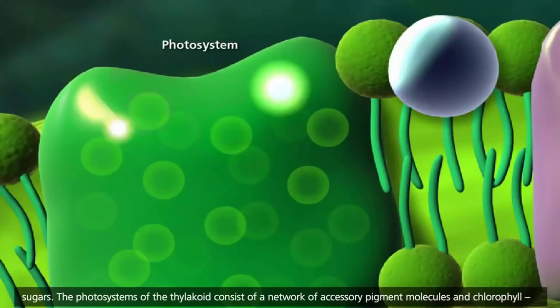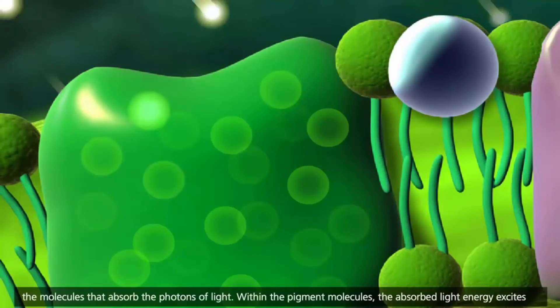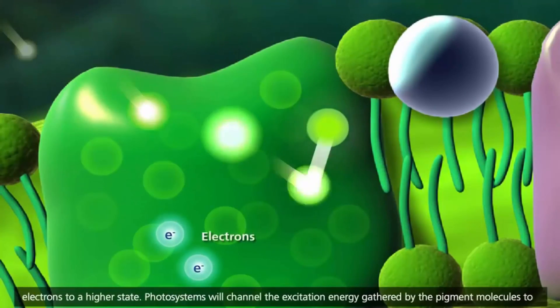The photosystems of the thylakoid consist of a network of accessory pigment molecules and chlorophyll, the molecules that absorb the photons of light. Within the pigment molecules, the absorbed light energy excites electrons to a higher state.